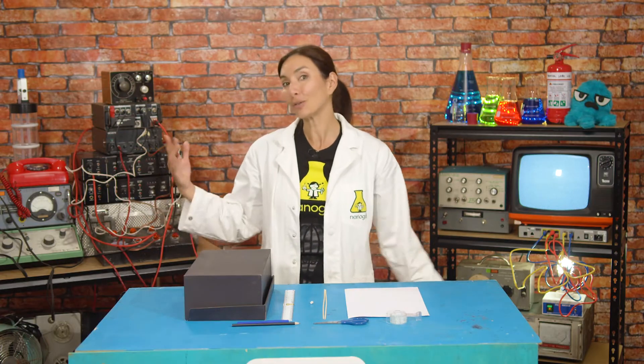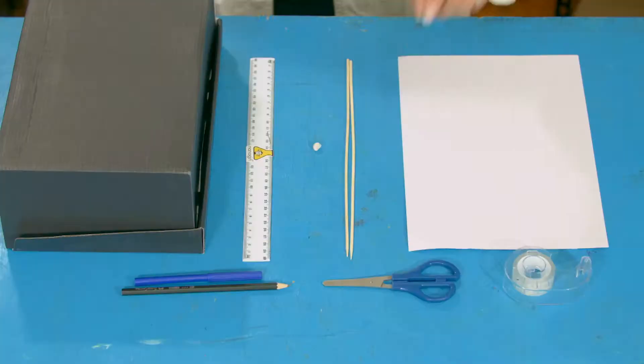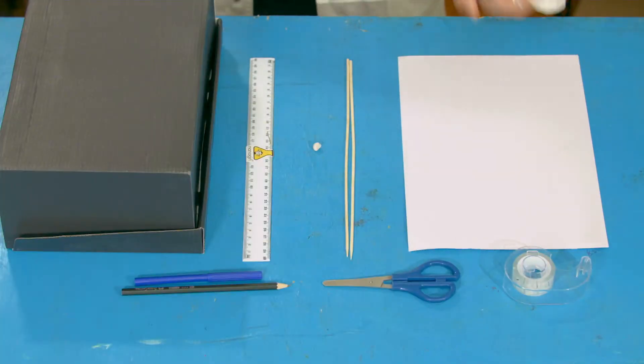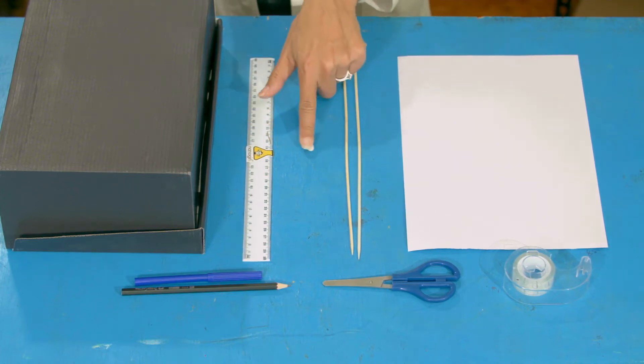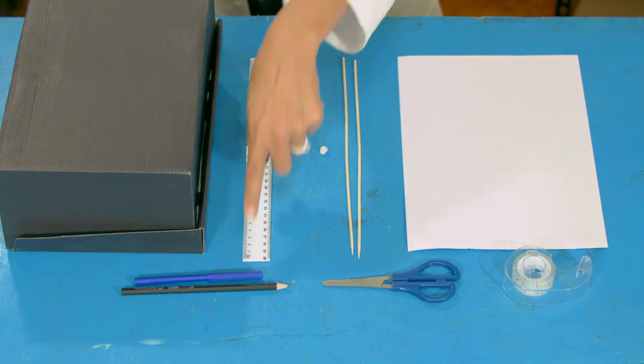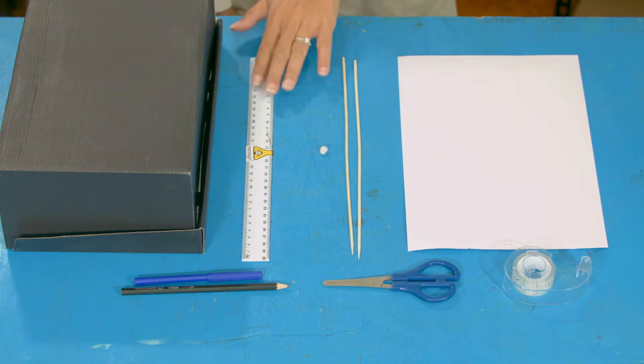For this experiment you're going to need a box—a shoe box is the best but you can use an empty cereal box—scissors, tape, two wooden skewers or sticks that are the same length, some card, a little bit of blue tack or plasticine, a pencil, a pen, and a ruler.